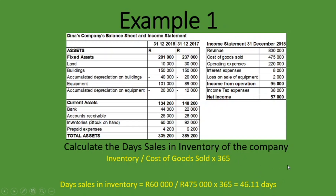So it takes the company on average 46 days to sell off their inventory. To interpret whether this is good or bad: if the previous year's ratio was greater than 46, the company is improving; if it was lower, they're not doing as well as before. Or compare to competitors — if a competitor's ratio is 60, you're doing better by clearing inventory faster. I hope this lesson has made sense — please subscribe, like, and share if you found it helpful.